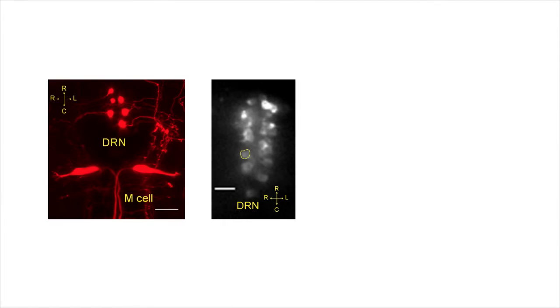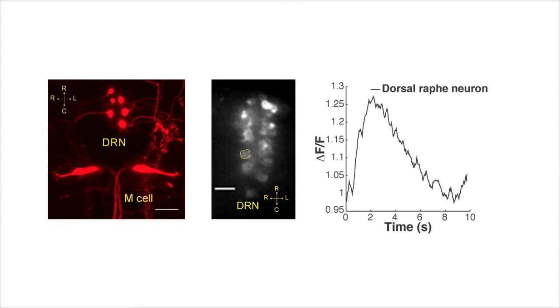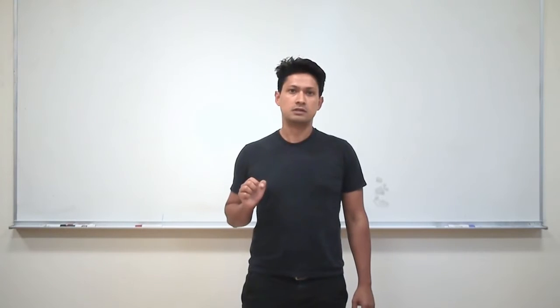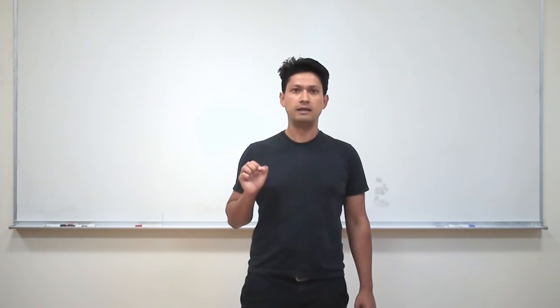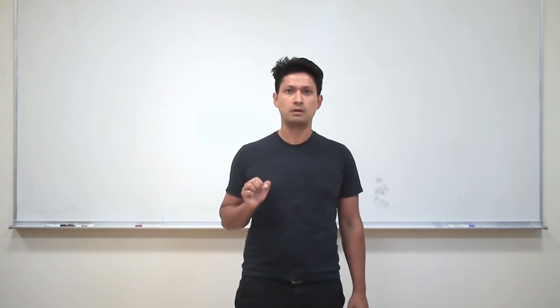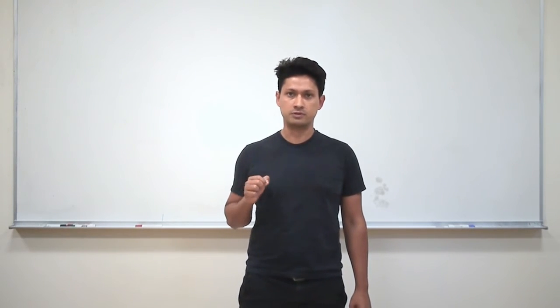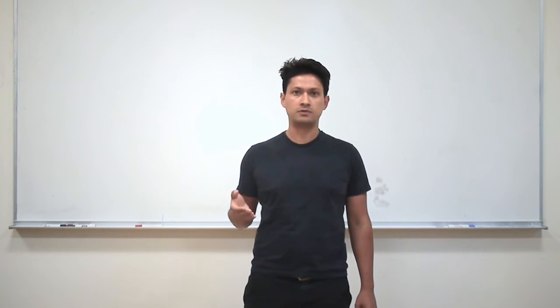We found that sound stimuli that induced the startle behavior also activated dorsal raphe neurons. Actually, low habituation individuals had stronger dorsal raphe activation for longer periods when presented with a series of acoustic stimuli. These results suggested a model in which serotonin inputs from the dorsal raphe nucleus inhibit startle habituation and that individual differences in the activation of the dorsal raphe by acoustic stimuli contribute to behavioral individuality.